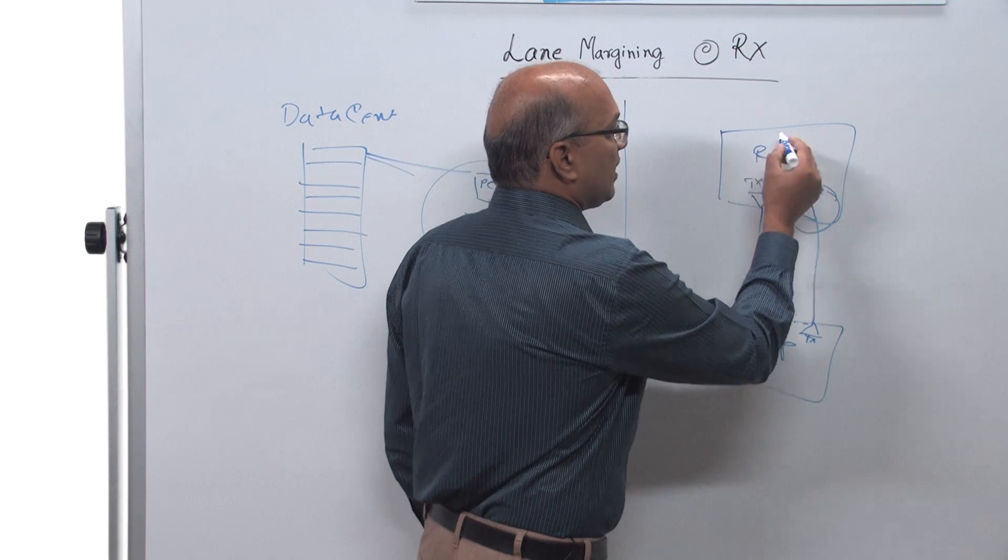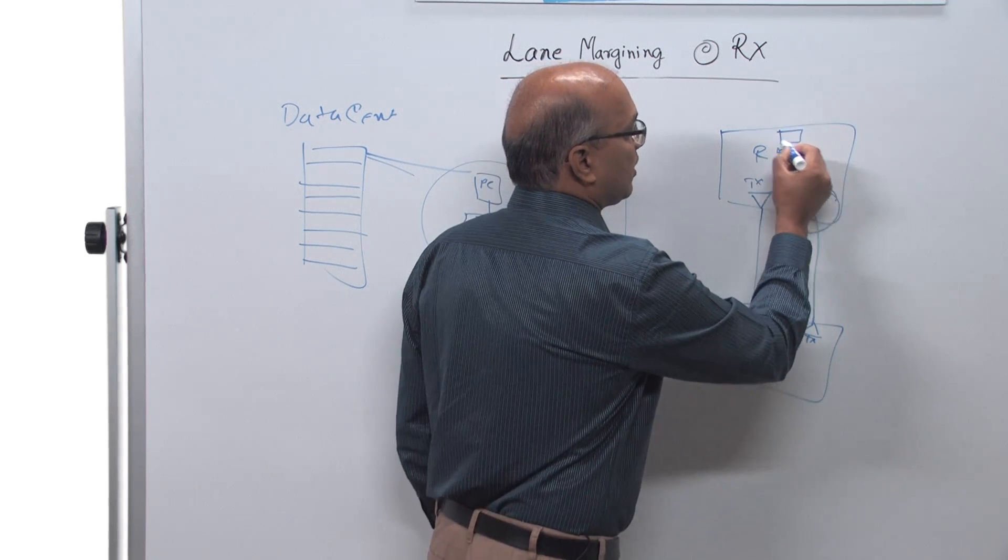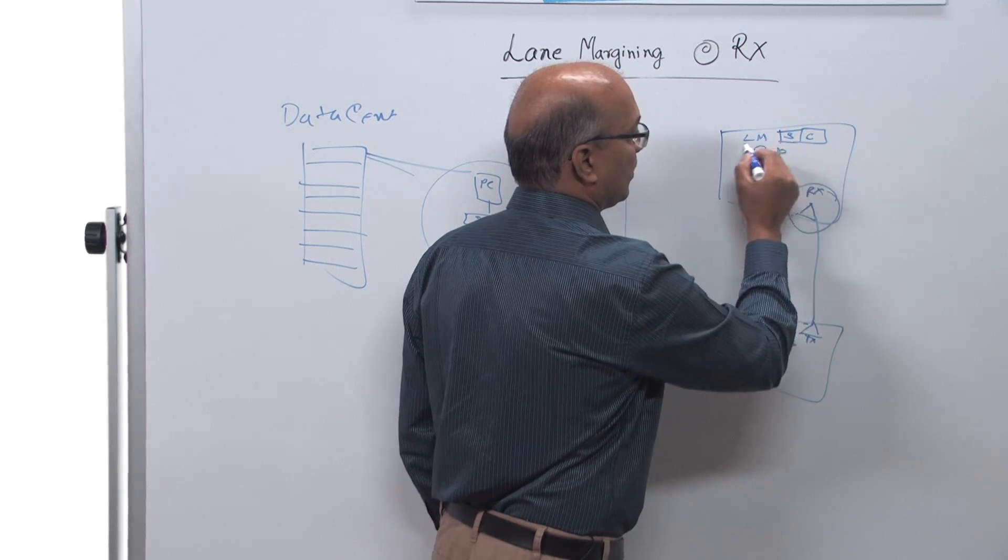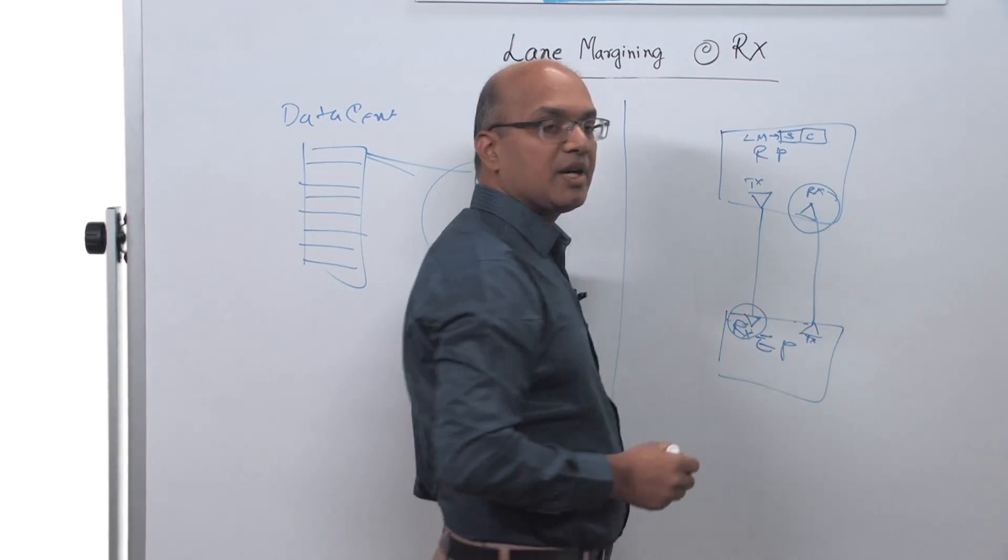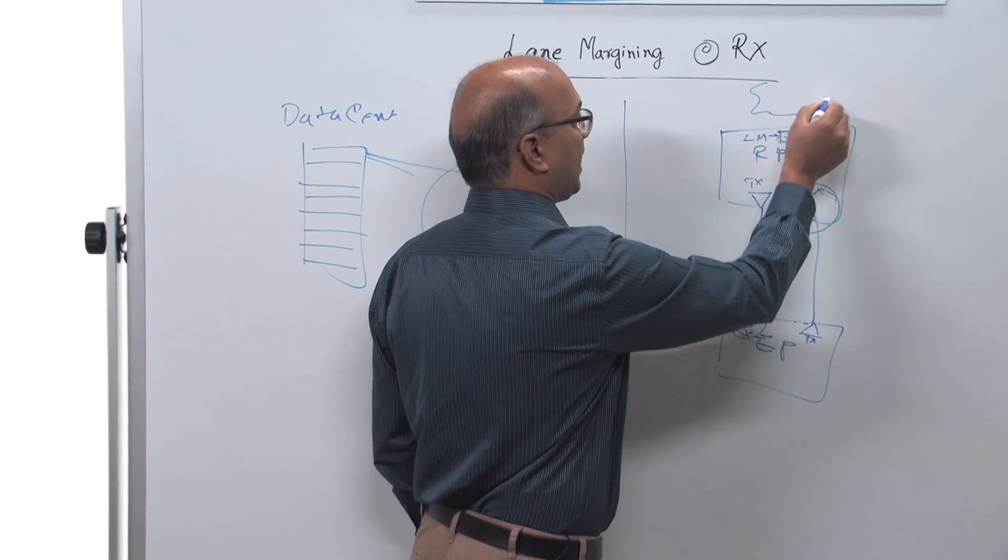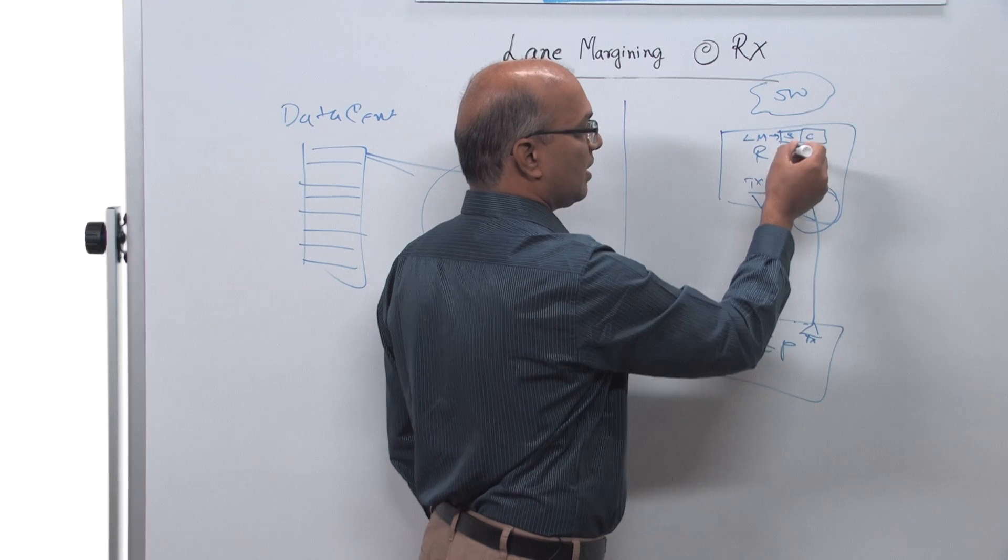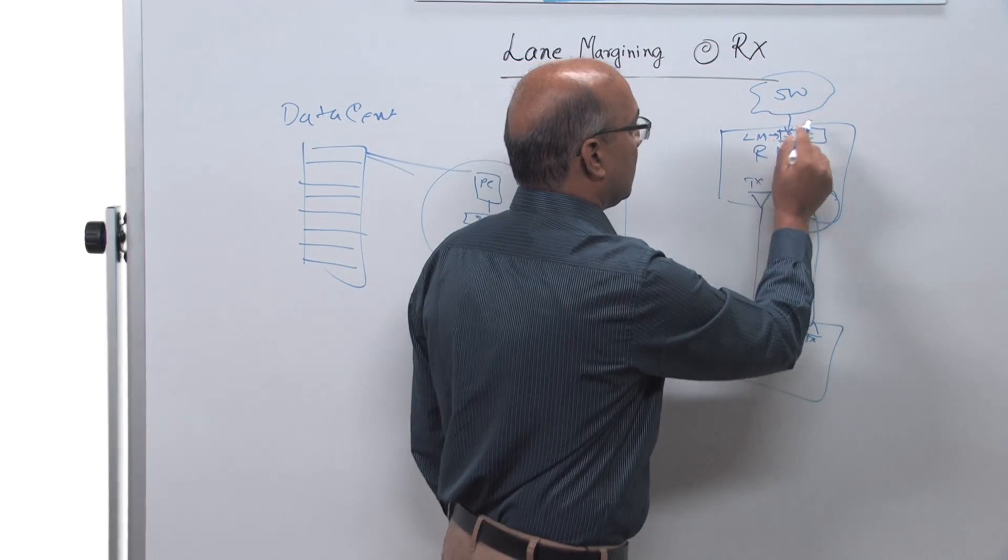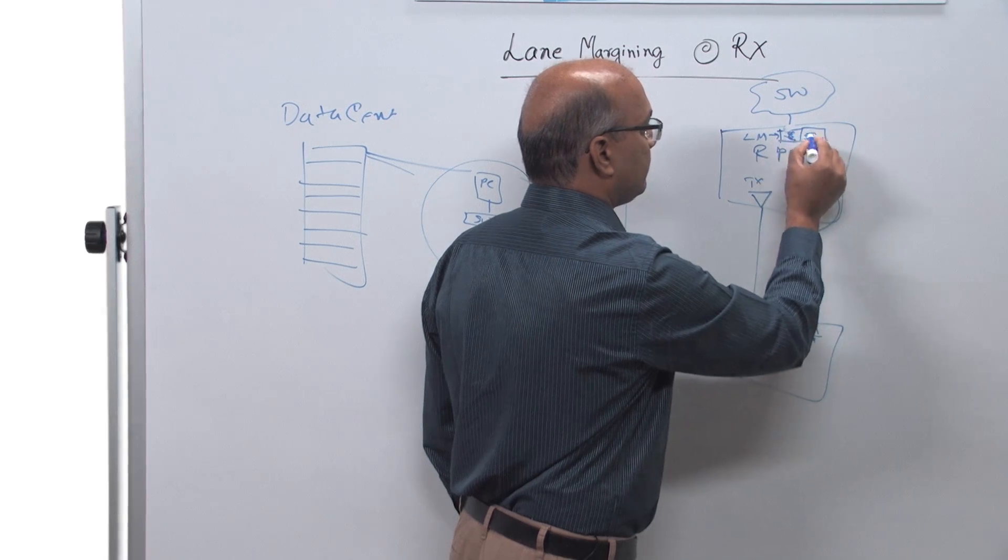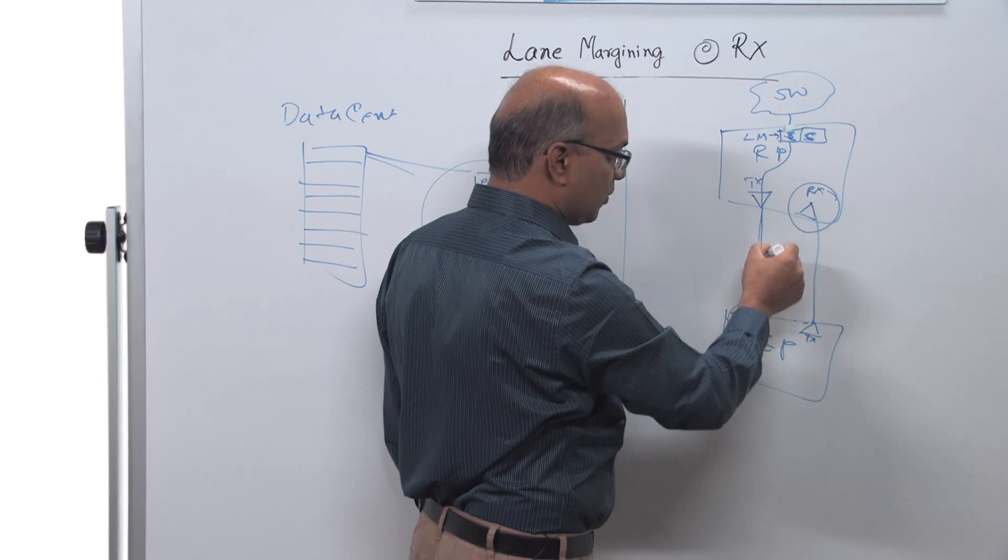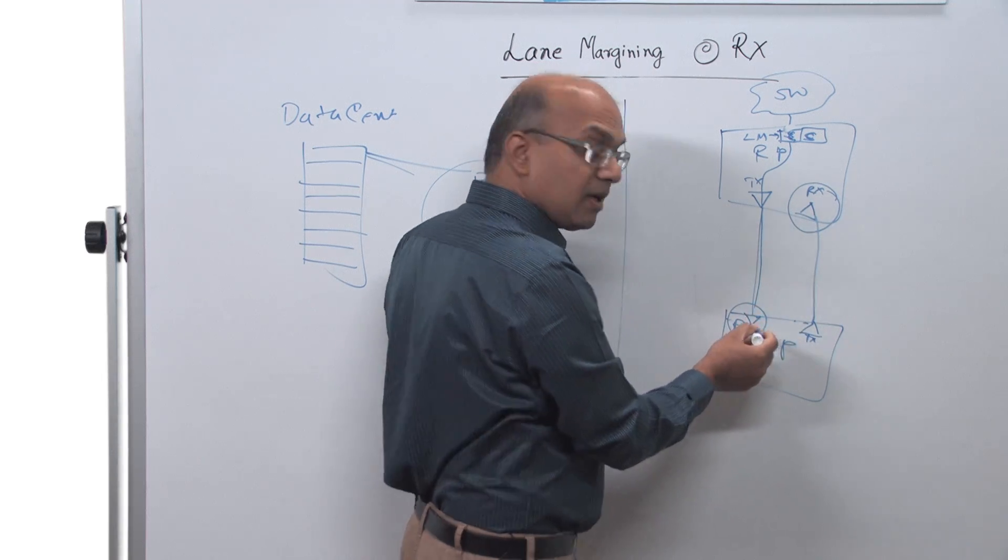The way it is done is, the spec has added two registers called lane margining status and lane margining control. There is a software stack that sits on top of this, and the command is sent to the control register.